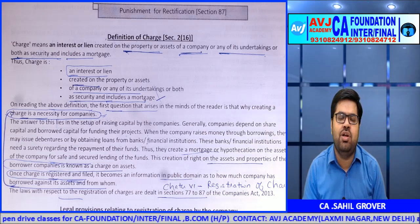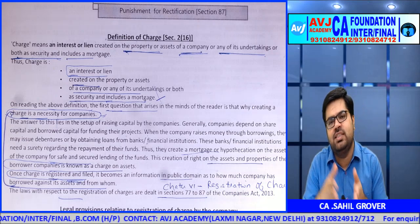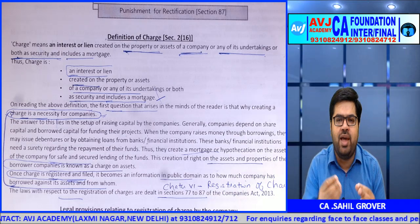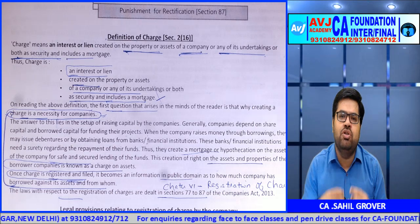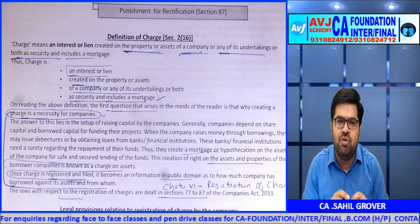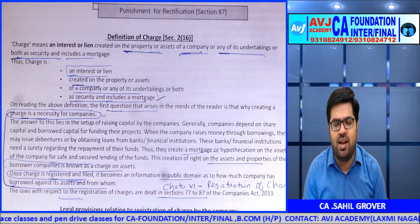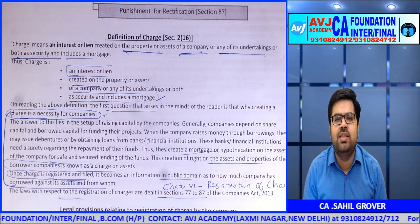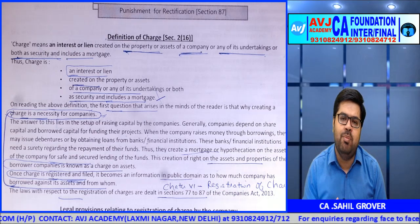Companies Act 2013 says that this charge must be registered with the Registrar as a company. In simple language: a limited company took a loan from Punjab National Bank, created a mortgage on its asset in that bank's favor — this mortgage is known as a charge. This charge must be registered by the company with the Registrar. The logic is that once this charge is registered with the Registrar, it will become public information.